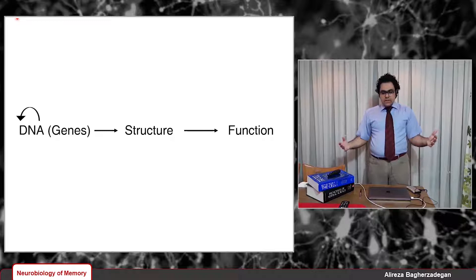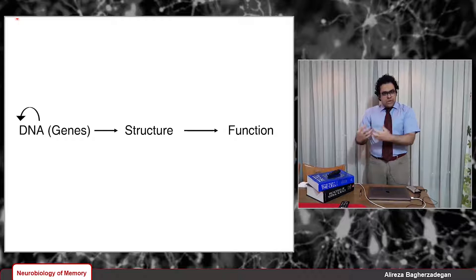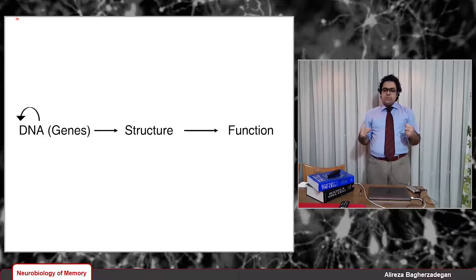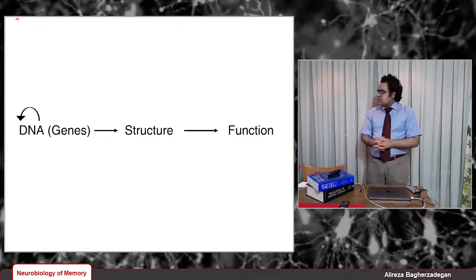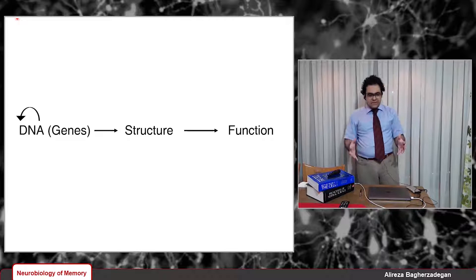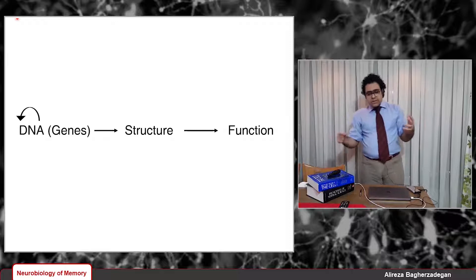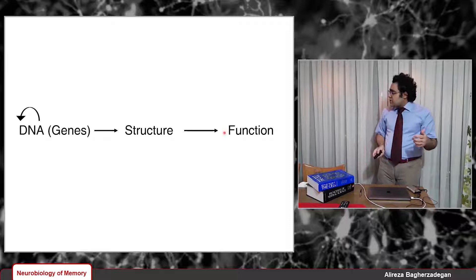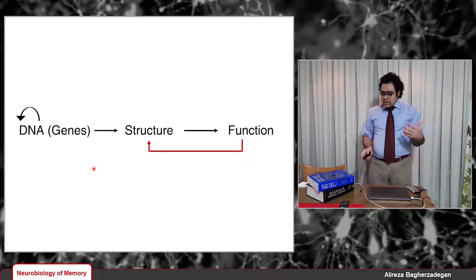What happens when we are born is that we are bombarded with billions of external signals. As we grow up, we interact with our environments more and more. We learn new skills, we experience new things. And it turns out that the way we use our brains — the more we interact with our environments and the more we try to put something into our long-term memories — the more we change the structure of our brains. This is intriguing, wonderful, and fascinating. It means there is a loop connection from function back to structure.